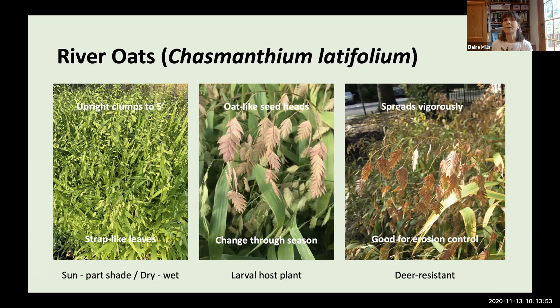River oats, Chasmanthium latifolium, grows slightly taller — up to about five feet — with strap-like leaves. Its oat-like seed heads change colors through the seasons: starting pale green, turning pink mid-summer, then tawny tan. The leaves serve as a larval host. This plant can spread quite vigorously. Note: native plants are sometimes mistakenly described as invasive — only non-native plants are accurately called invasive. A vigorously growing native plant is better described as aggressive.